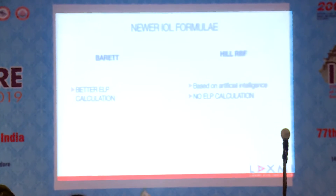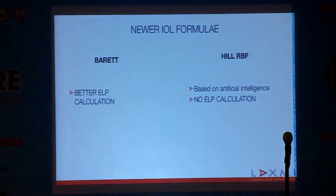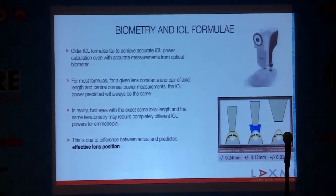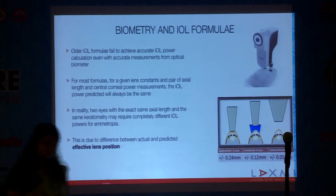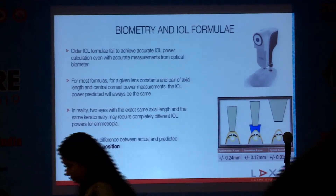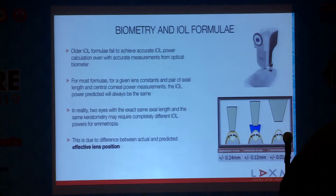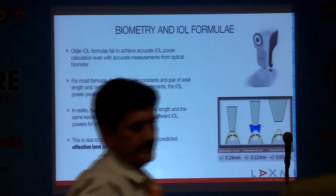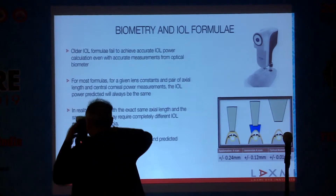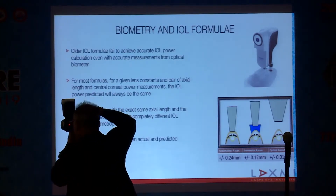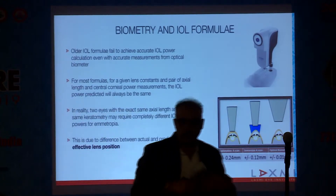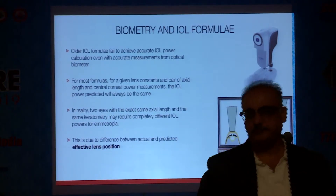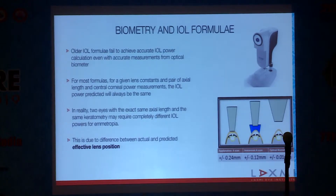Hill RBF is based on artificial intelligence, and here no ELP calculation is done. Older formulas failed to achieve accurate IOL power calculation despite accurate measurements from optical biometers. This is because for most formulas, for a given lens constant and a pair of keratometry and axial length readings, the IOL power measured is always the same for all eyes. But in reality, for the same axial length, keratometry reading, and lens constant, the IOL power required to achieve emmetropia might be different for two different eyes — because of differences in effective lens position.